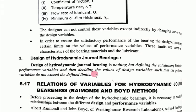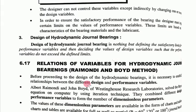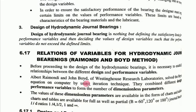The design of hydrodynamic journal bearing means defining satisfactory limits for the performance variables and selecting values of design variables such that the performance variables do not exceed the defined limits. That is called the design of hydrodynamic journal bearing.